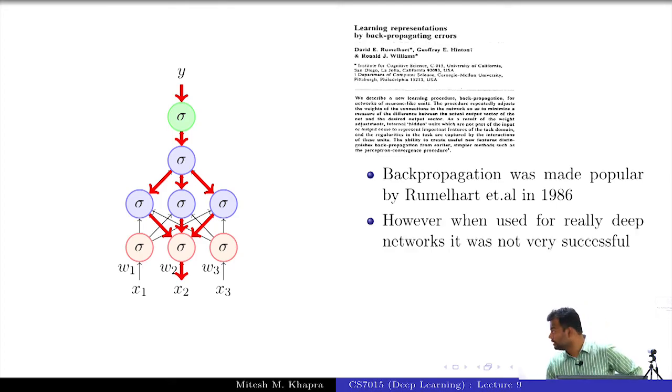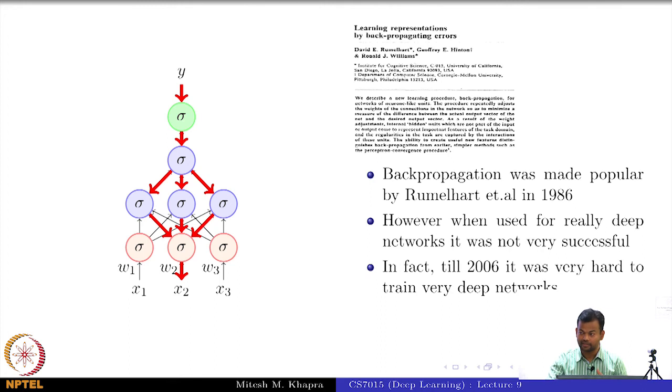Actually what happened in the late 80s and early 90s and even early 2000s, when you used back propagation to train really deep networks, it was not very successful and what do I mean by not successful actually? What are the two things that could happen? Someone gave the answer already, it did not converge right. That means, you do not reach the optimum solution.